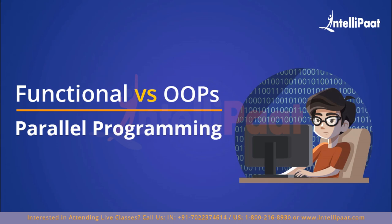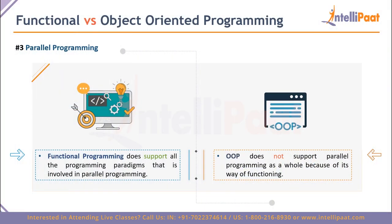Point three is support for parallel programming, where functional programming has a slight edge. Functional programming supports the parallel programming paradigm and distributed computing for high efficiency. OOP does not natively support parallel programming — you can try to imitate it, but it is not as efficient as functional programming and doesn't function as productively either. So functional programming wins this round.